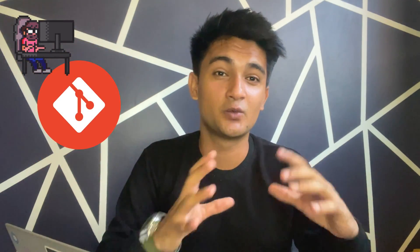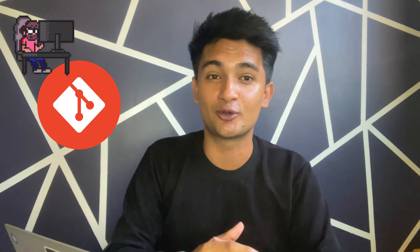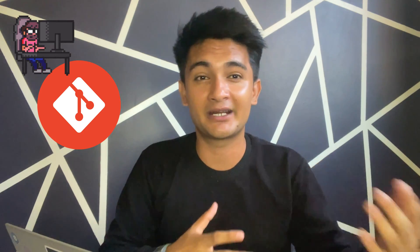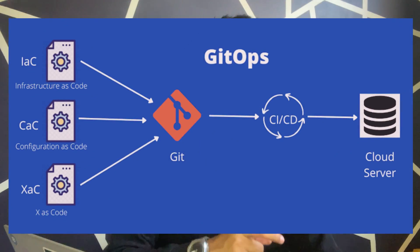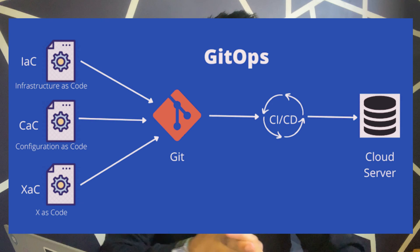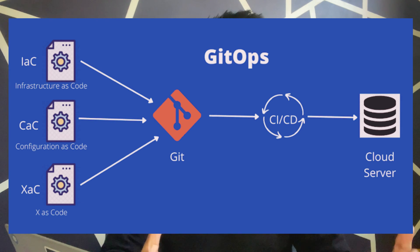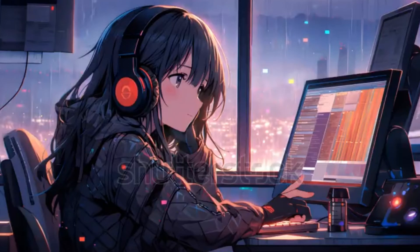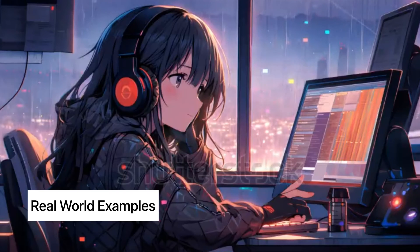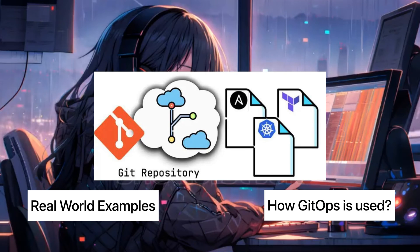As a DevOps engineer, you might already be familiar with Git, which is a version control tool that lets you store your code on different repositories like GitHub, GitLab, or Bitbucket. So GitOps is a DevOps practice where you have Git as a single source of truth to deploy your applications, manage infrastructure, or configure them. Let's understand this with real world examples using popular DevOps tools like Kubernetes, Ansible, or Terraform.